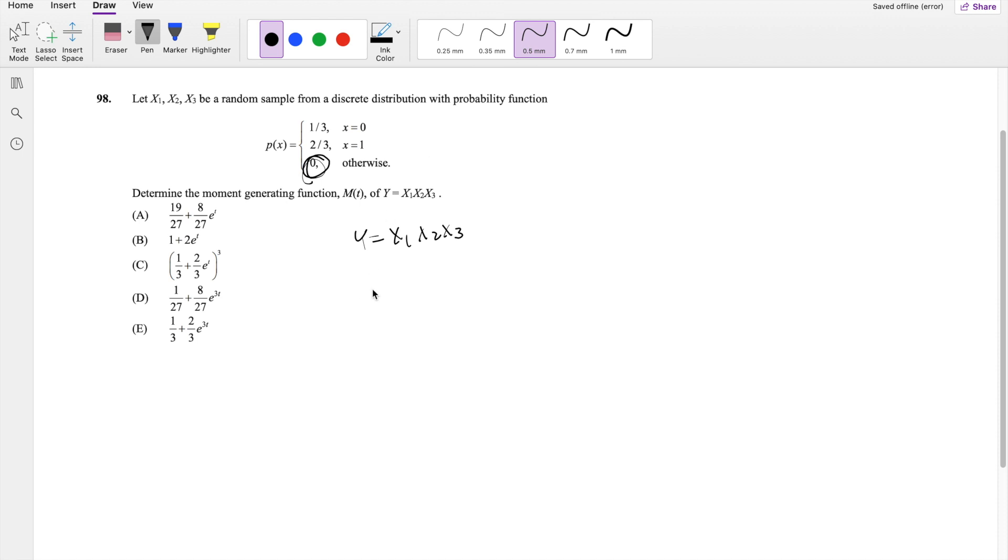So there's actually essentially two cases that could happen, case 1, where x1, x2, and x3 are all equal to 1, because then the y value here is going to be 1. And this happens with a probability, if x1 is equal to 2/3, and x2 is equal to 2/3, and x3 is also equal to 2/3, that probability that y is going to be equal to 1 is going to be equal to 8/27.